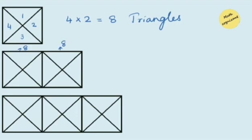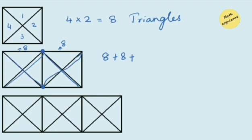Let's check the second figure. There are two squares of the same type, and each square makes 8 triangles. Next, where two squares meet there will be a formation of one triangle. So 8 plus 8 is 16, and 16 plus 2 for the bigger triangles equals 18 triangles total when we have two squares diagonally divided.